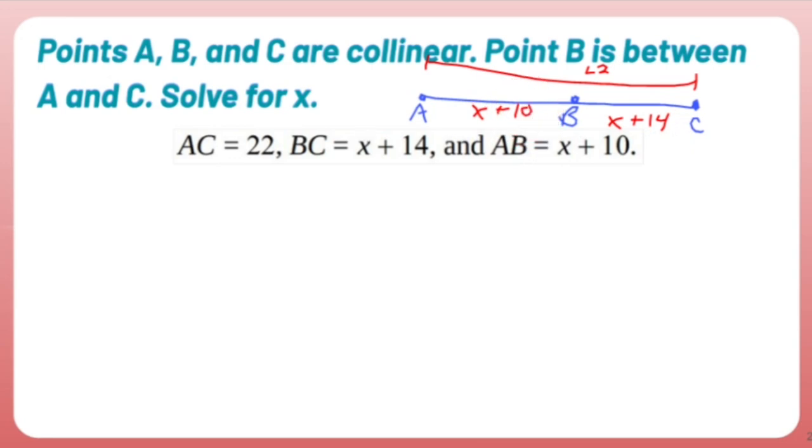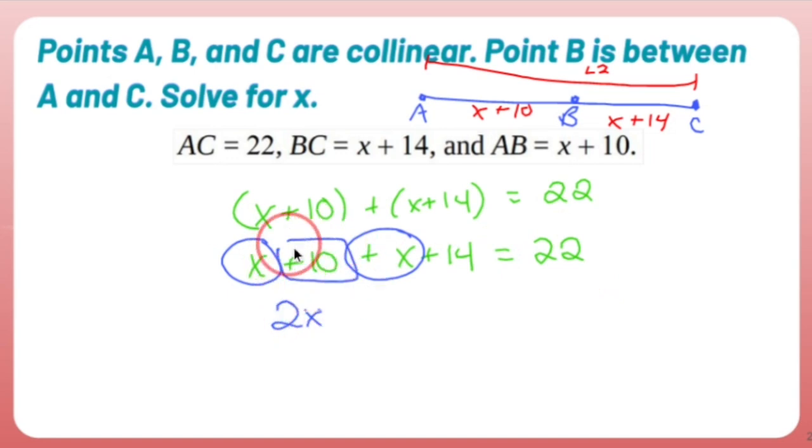So what do I know? Well, according to the segment addition postulate, AB plus BC equals AC, which means AB X plus 10 plus BC. So I can put that in parentheses even though it's useless. Plus X plus 14 is going to equal 22, the aforementioned Taylor Swift special. Now these parentheses were useless. So let me rewrite it, getting rid of those parentheses. Let's combine the X's on the left. X and X make 2X. 10 and 14 make 24. And that equals 22.